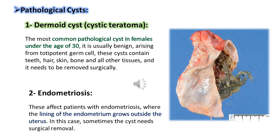Pathological cysts: dermoid cystic teratoma is the most common pathological cyst in females under the age of 30. It is usually benign, arising from totipotent germ cells. This cyst contains teeth, hair, skin, bone, and other tissues, and it needs to be removed surgically. Endometriosis cysts affect patients with endometriosis, where the lining of the endometrium grows outside the uterus; in this case, the cyst sometimes requires surgical removal.